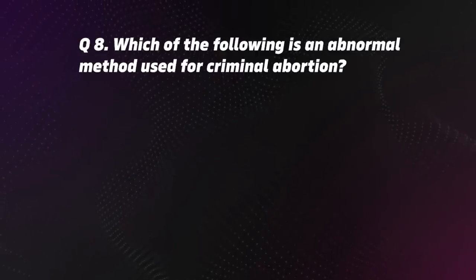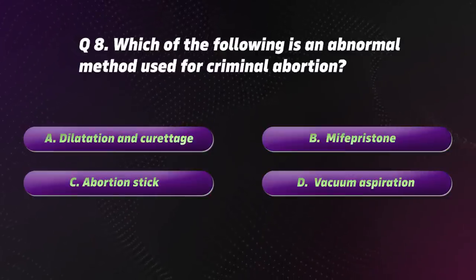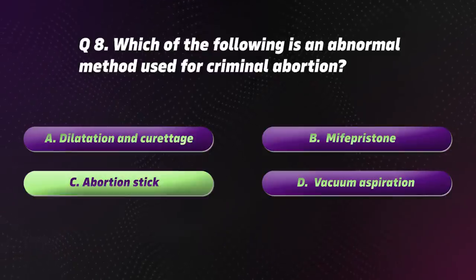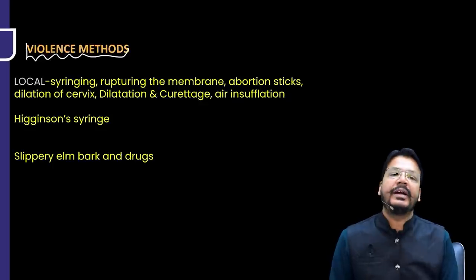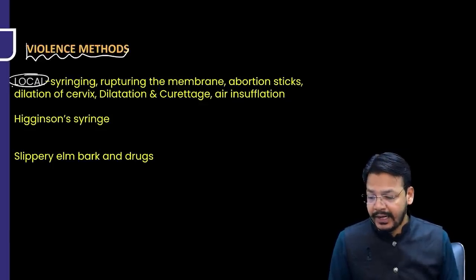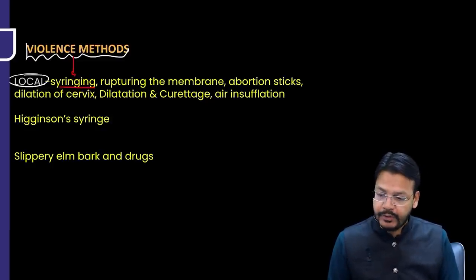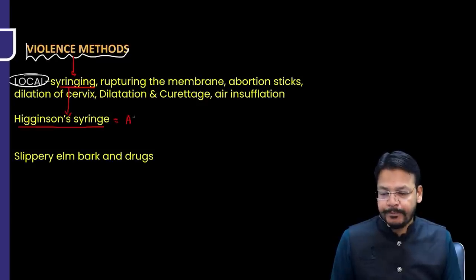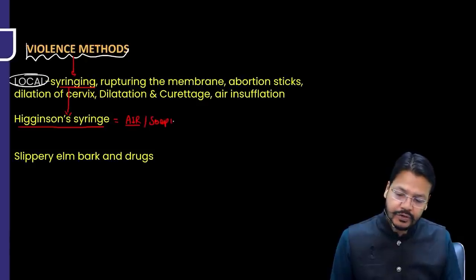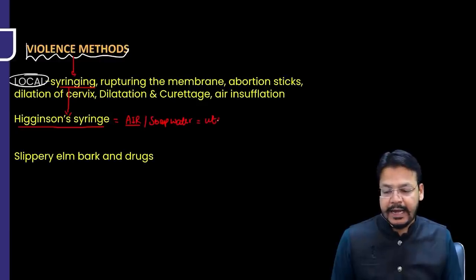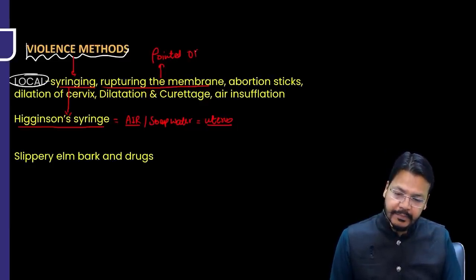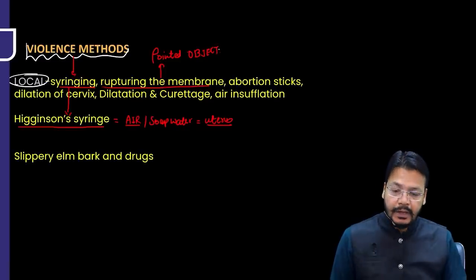Question 8. Which of the following is an abnormal method used for criminal abortion? Options: A. Dilatation and curettage, B. Mifepristone, C. Abortion stick, D. Vacuum aspiration. The correct option is C — Abortion stick. Violent local methods include: syringing (using Higginson syringe with air or soap water into uterus), rupturing of membranes by pointed object, abortion stick, and dilation of cervix by slippery elm bark or drugs.